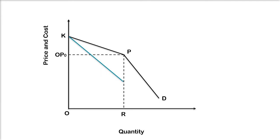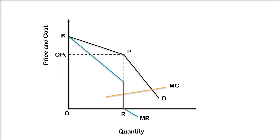Starting from point P corresponding to the current price OP0, any increase in the price above it will considerably reduce his sales because his rivals are not expected to follow his price increase. The KP portion of the kinked demand curve is elastic and the corresponding portion KA of the MR curve is positive. Therefore, any price increase will not only reduce his total sales but also his total revenue and profit.